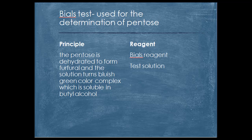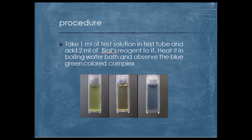Pentose is dehydrated to form furfural and the solution turns a bluish-green color complex, which is soluble in butyl alcohol. These are the reagents used. You can see the presence of the blue-green colored complex, which confirms the test.